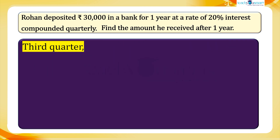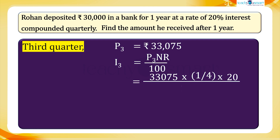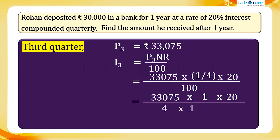For the third quarter, principal P3 equals 33,075 rupees. Therefore, interest for the third quarter: I3 equals P3 × N × R divided by 100, equals 33,075 × (1/4) × 20, whole divided by 100, equals 33,075 × 1 × 20, whole divided by 4 × 100. I3 equals 1,653.75 rupees.